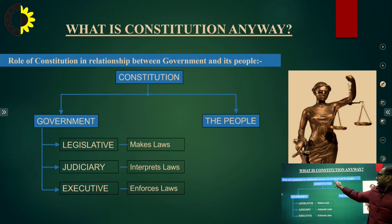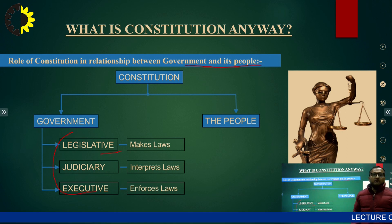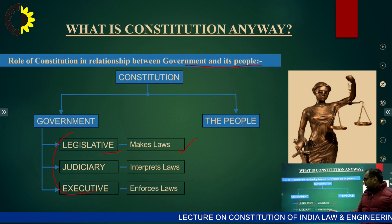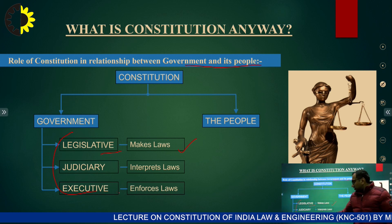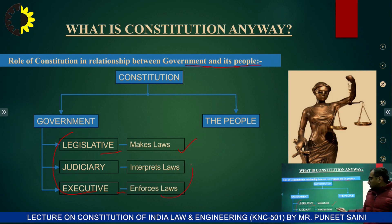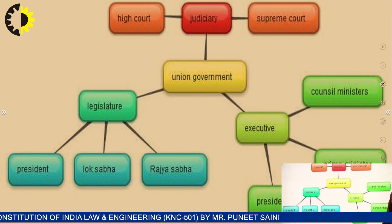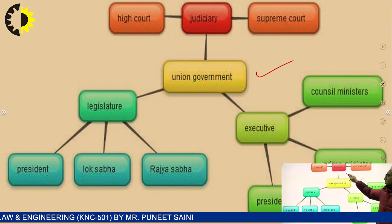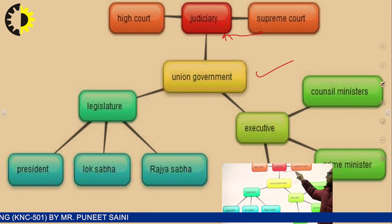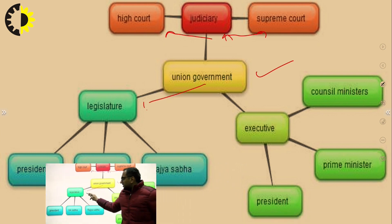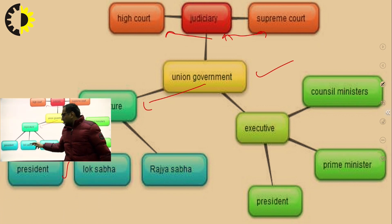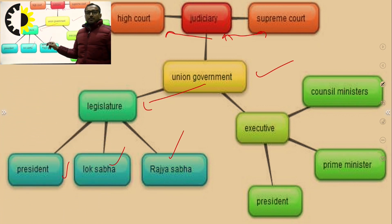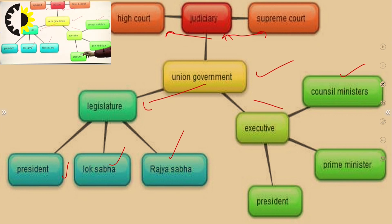The role of the constitution is the relationship between government and its people. Government contains three parts. First is the Legislature, whose duty is to make laws. Second is the Judiciary, whose role is to interpret these laws — this includes the Supreme Court and High Courts. Third is the Executive, which refers to law enforcement agencies like the police that enforce these laws. In the union government, the Legislature includes the President, Lok Sabha (lower house), and Rajya Sabha (upper house). The Executive contains the council of ministers, the president, and the prime minister.